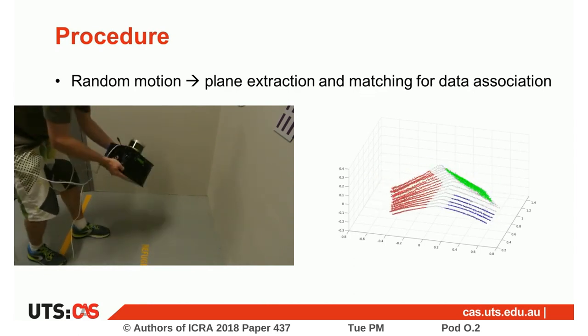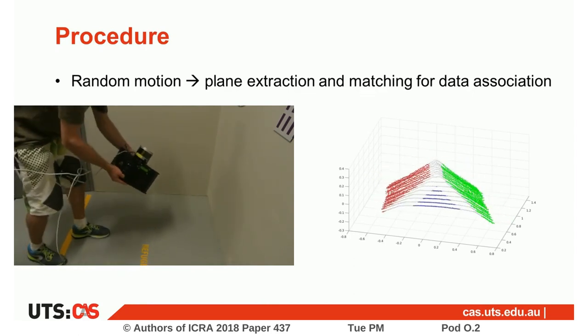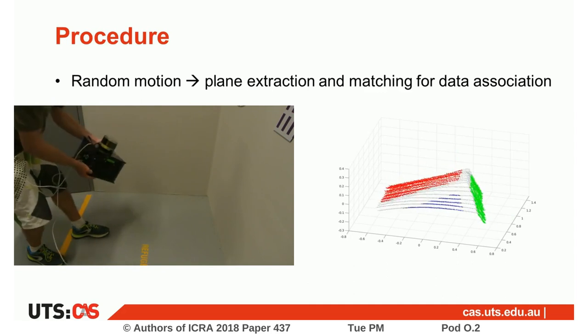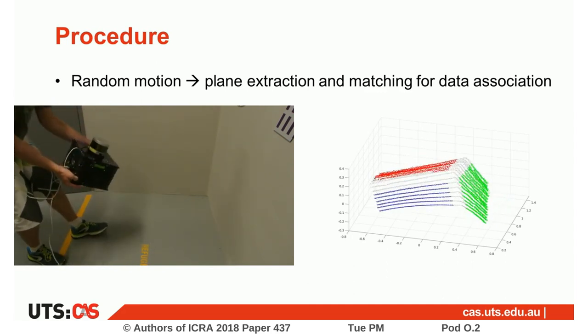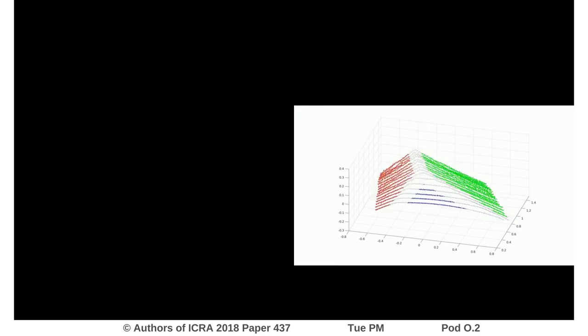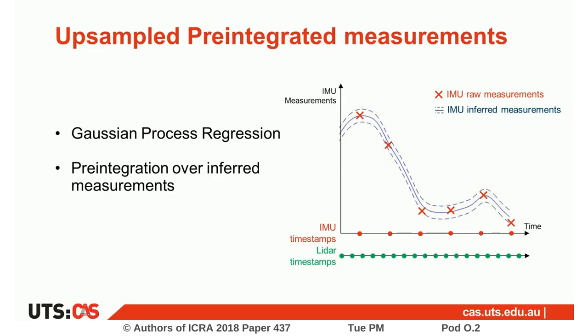After reprojecting the points in the first LiDAR frame, we compute point-to-map plane distances as a function of the calibration parameters and the IMU poses. We came up with up-sampled pre-integrated measurements to estimate the system's pose at the timestamp of every LiDAR point. These measurements use the pre-integration principle over up-sampled inertial measurements.